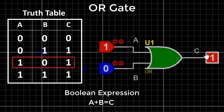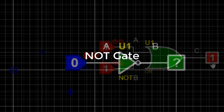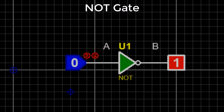Apply zero and zero — the output is also zero. Apply zero and one — the output is one. Apply one and zero — the output is again one. Apply one and one — the output is still one. NOT gate: The NOT gate is an electronic circuit that gives the inverted output of the input, which is why it is also called an inverter.